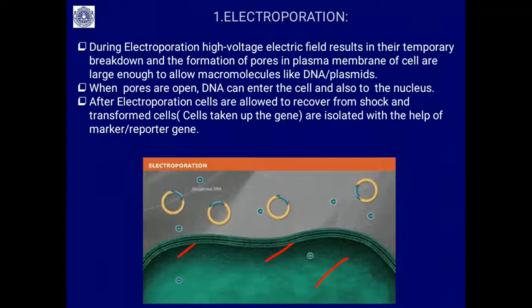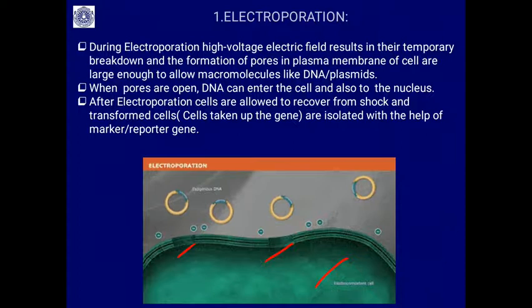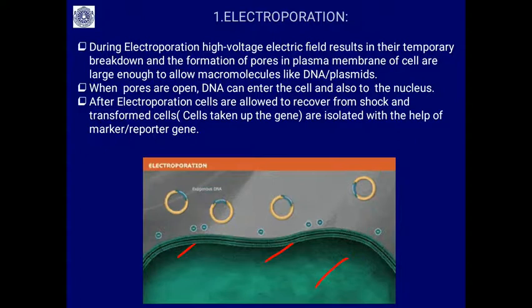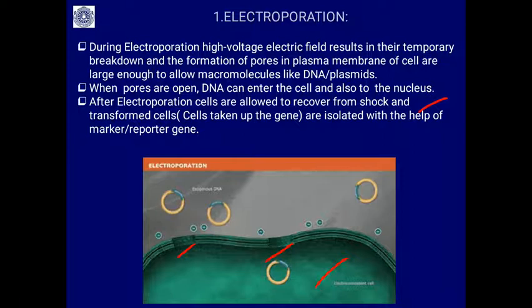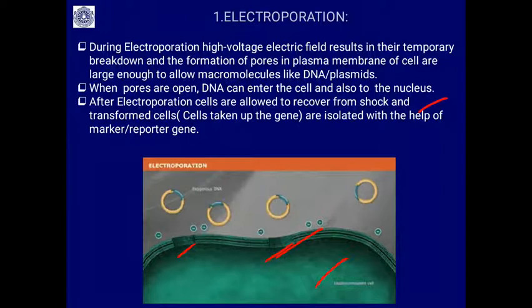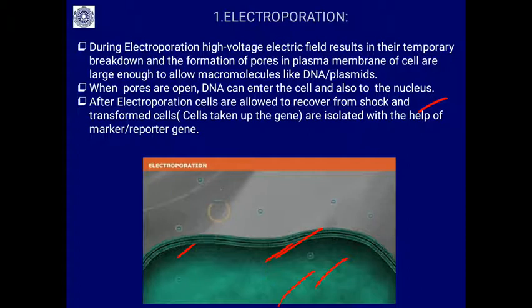During electroporation, a high voltage electric field results in a temporary breakdown and formation of pores in the plasma membrane of cells, large enough to allow macromolecules like DNA plasmids to get into the cytoplasm. When pores are open, DNA can enter the cell and also the nucleus, as pores are made not only on the plasma membrane but also on the nuclear membrane, so it can also enter the nucleus. After electroporation, cells are allowed to recover from the shock, and the transformed cells — those carrying our gene of interest — are isolated with the help of a marker gene.